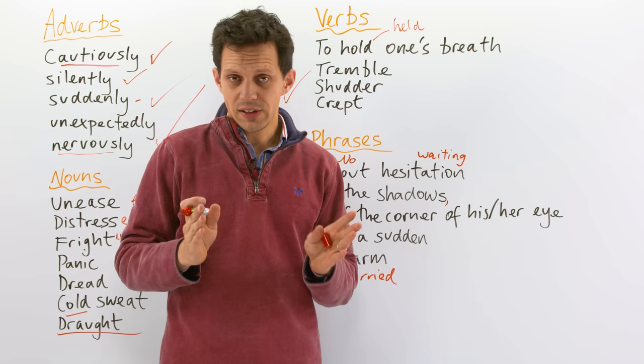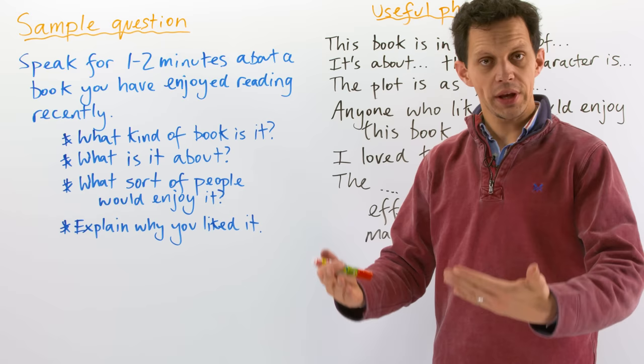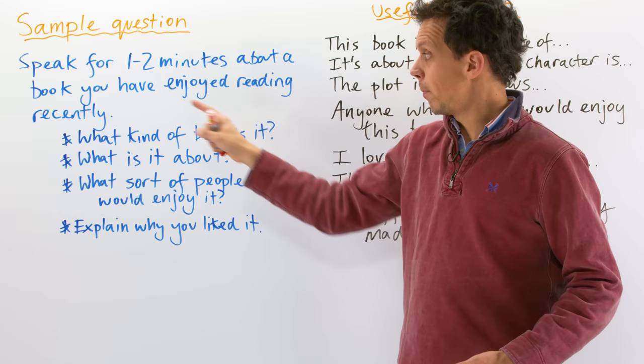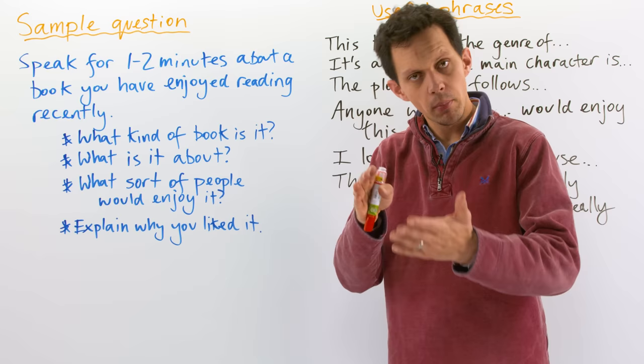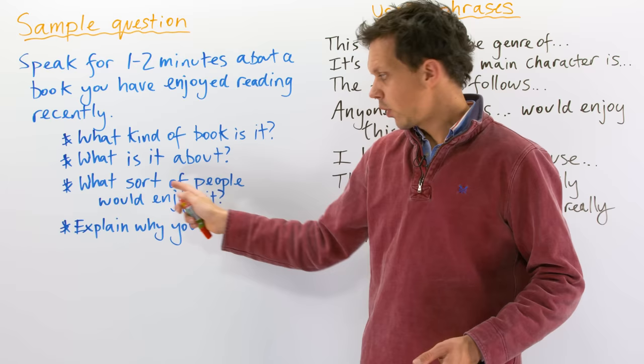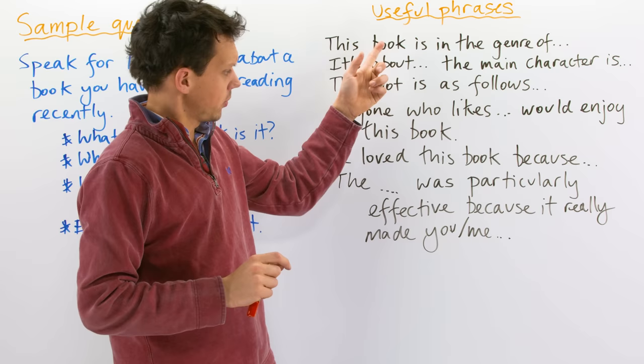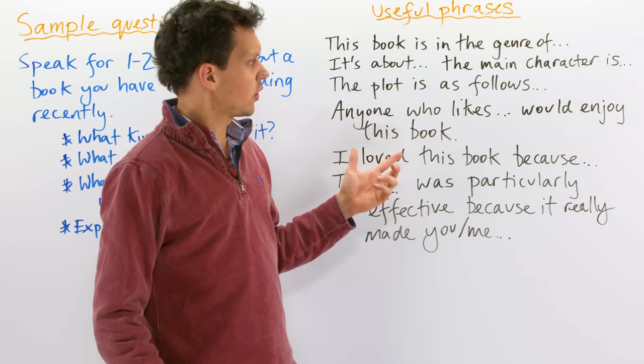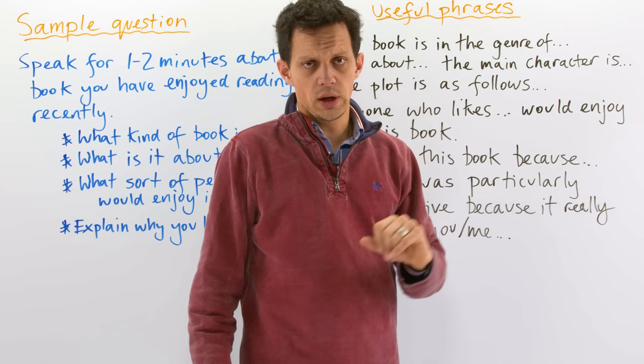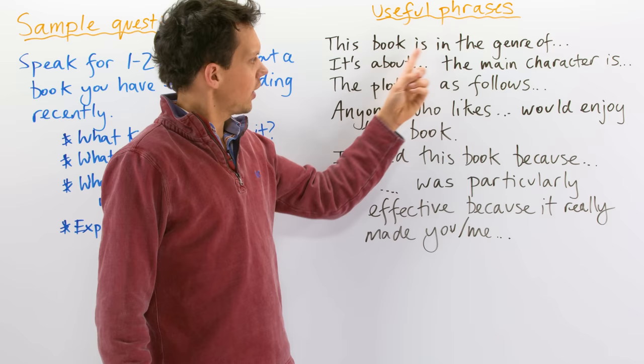Here we have a sample question for talking about a book. Speak for one to two minutes about a book you have enjoyed reading recently. These bullet points are what you must include when you're doing one of these speaking tasks. What kind of book is it? What is it about? What sort of people would enjoy it? And explain why you liked it. What I've done is I've put up some useful phrases here that you could use if you were talking about a book. And then you could change them slightly if you were talking about a film or television program.